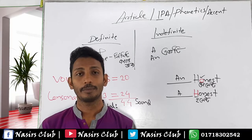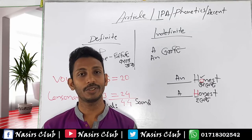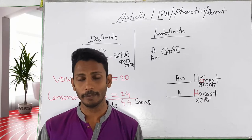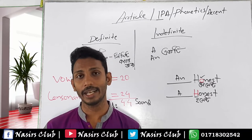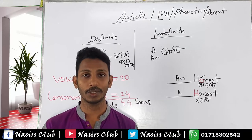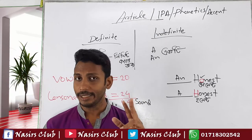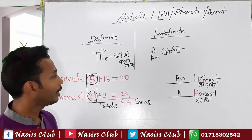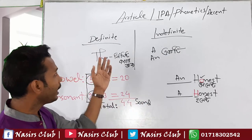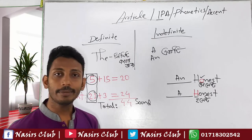Most of the students in our country don't know why they use articles. For example, there are words at level 6 and level 1, and level 3 — these are the words that are called articles. This article is called: number one, definite, and number two, indefinite.